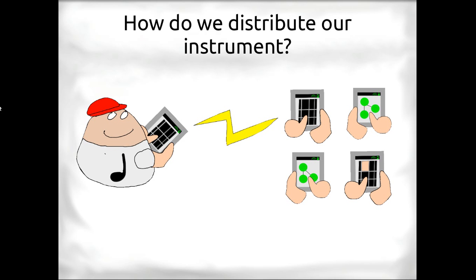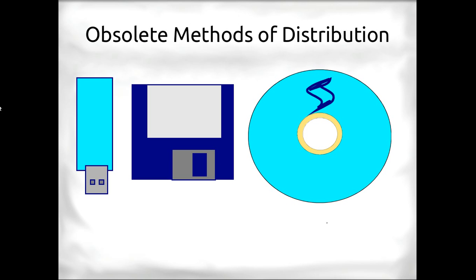We want the audience to have our instrument — we want to be able to beam the instrument to the audience. But we have to overcome some hurdles. For one, we have obsolete methods of distribution. These methods don't work on most mobile devices. iPhones are pretty locked down — you can't put in an SD card, lots of Android phones you can't either, and no one has disk drives or CD drives anymore.